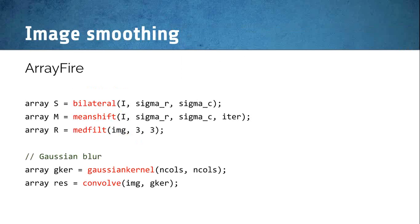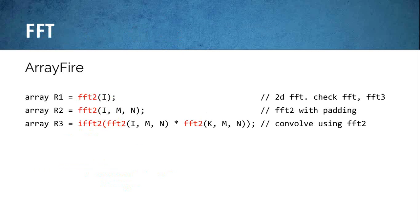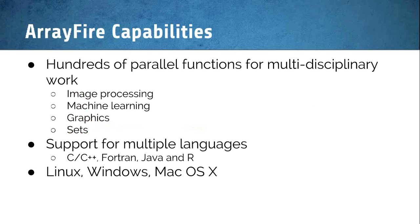For image smoothing, we have bilateral smoothing, mean shift, median filter, Gaussian kernel, and convolution — all implemented for you. If you're using ArrayFire, you can use a 2D FFT, a 3D FFT, FFT with padding, and convolution using an FFT. There's a lot of things you can do.